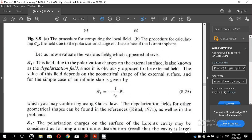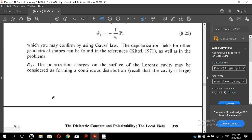Let us now evaluate these various fields which appeared above. E1, this field due to polarization charges on the external surface is also known as the depolarization field, since it is obviously opposed to the external field. The value of this field depends on the geometrical shape of the external surface. For the simple case of an infinite slab, it is given by E1 equals minus 1 over epsilon naught into capital P, which you may confirm by using Gauss's law. The depolarization field for other geometrical shapes can also be found in the reference Keto 1971 as well as in the problems.